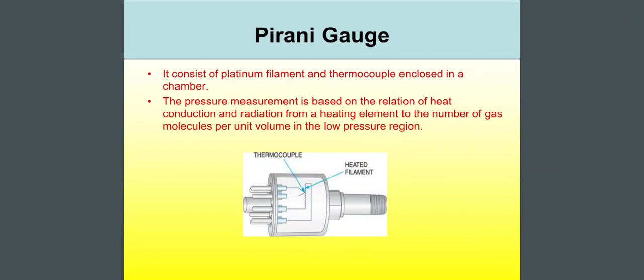Next topic, pirani gauge. It consists of platinum filament and thermocouple enclosed in a chamber. The pressure measurement is based on the relation of heat conduction and radiation from a heating element to the number of gas molecules per unit volume in the low pressure region. There is a figure where you can see the thermocouple and heated filament.